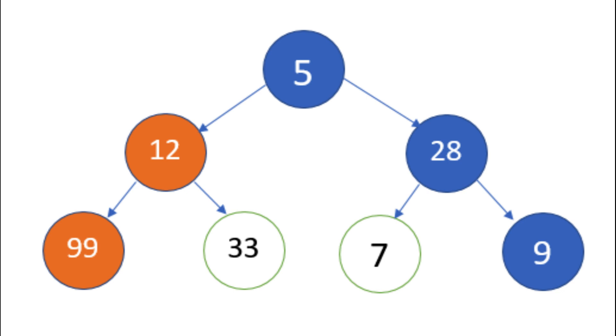This approach works when the coin denominations are well suited for it, like in the case of the US coin system: quarters, dimes, nickels, and pennies. But it might fail with other sets of denominations.